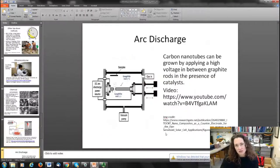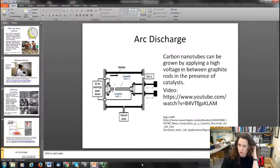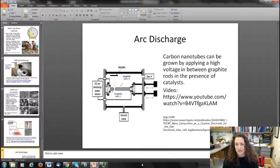We've talked about the arc discharge method to make carbon nanotubes and other sort of carbon materials. Basically you can grow carbon nanotubes and other types of fullerene materials by applying high voltage in between graphite rods in the presence of catalysts.